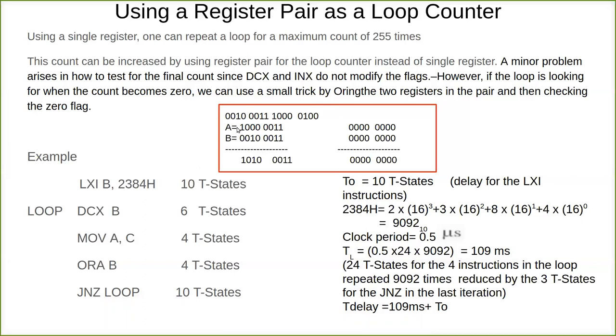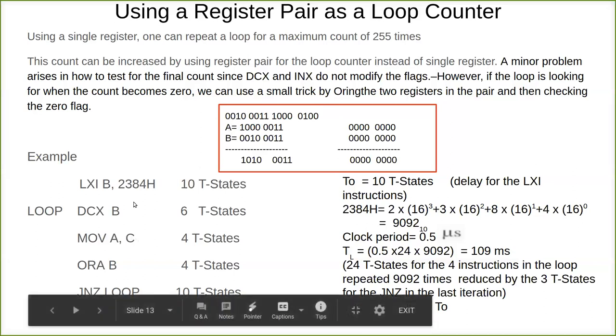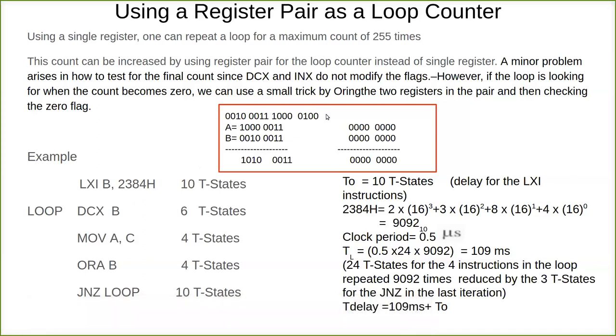Here I have given this example, this I have written in binary. Now A is 1, 0, 0. The value in C register, B and C. This is in B and this is in C. So this C value is moved to A.